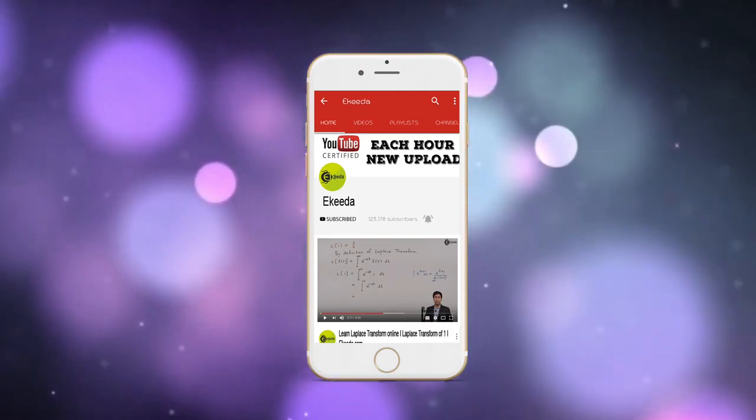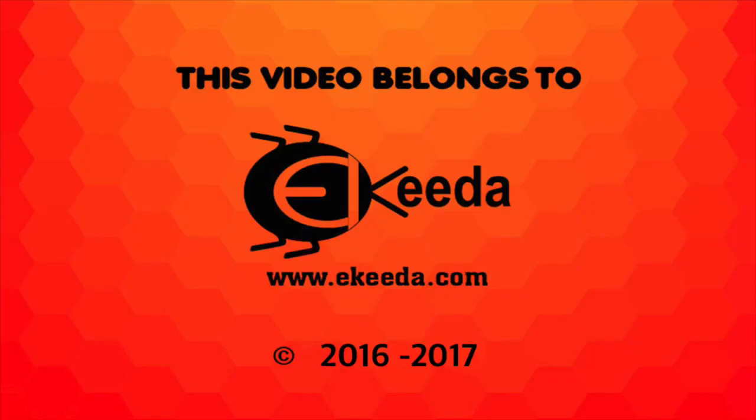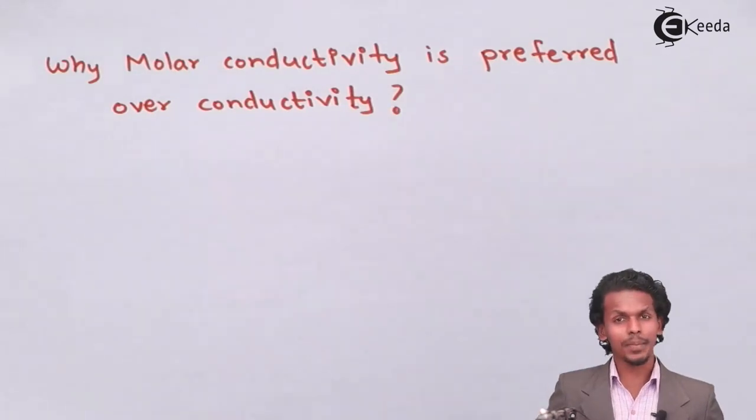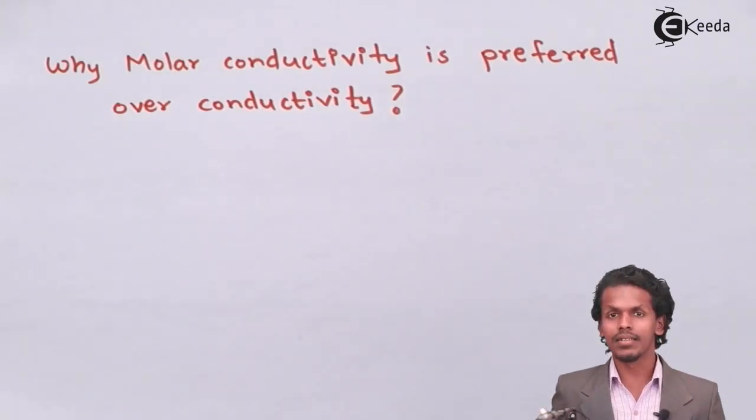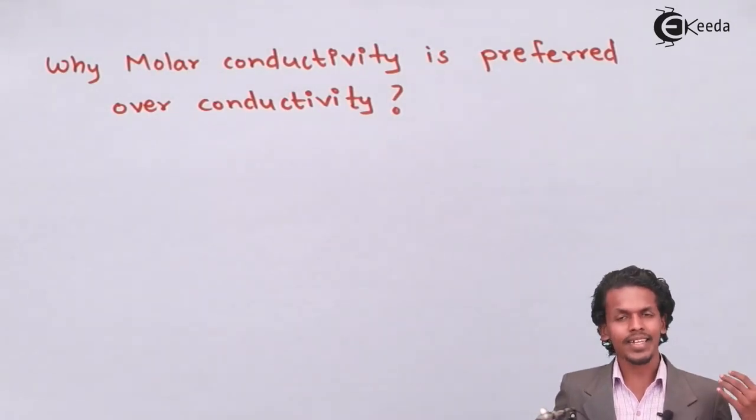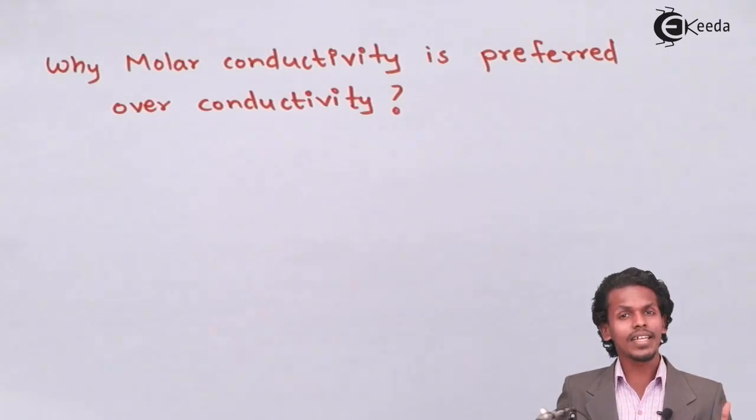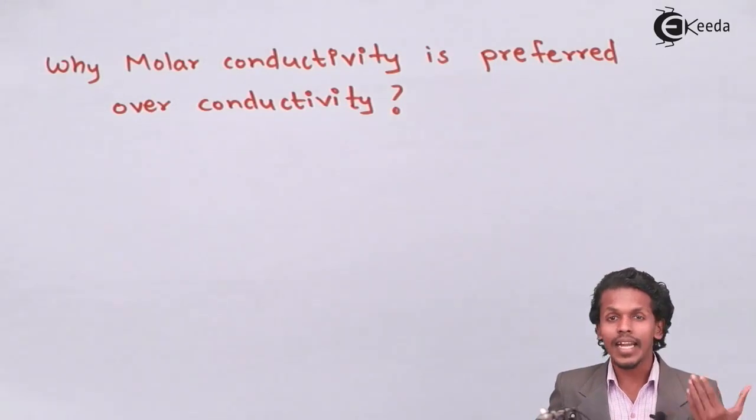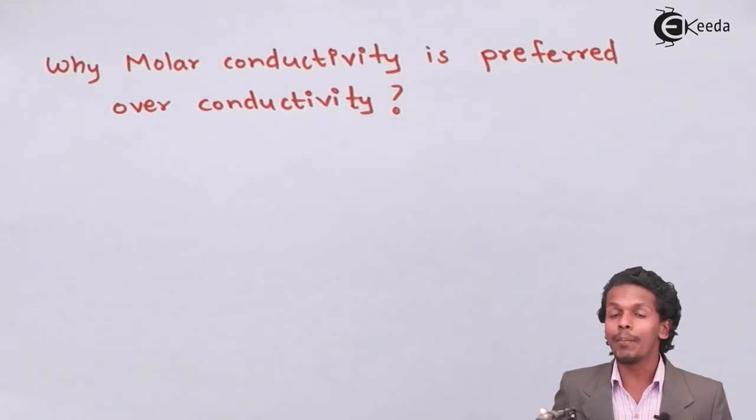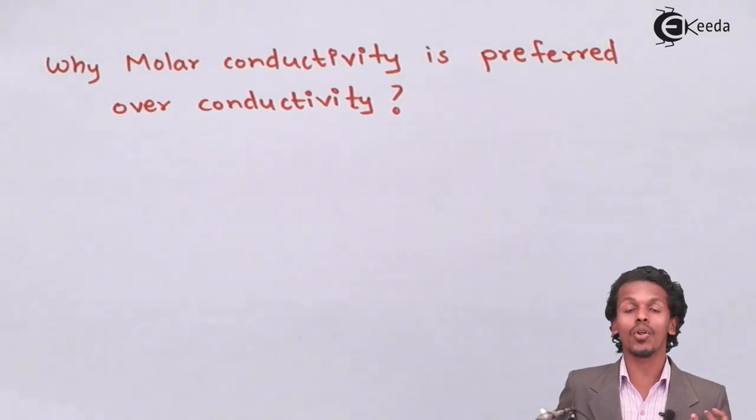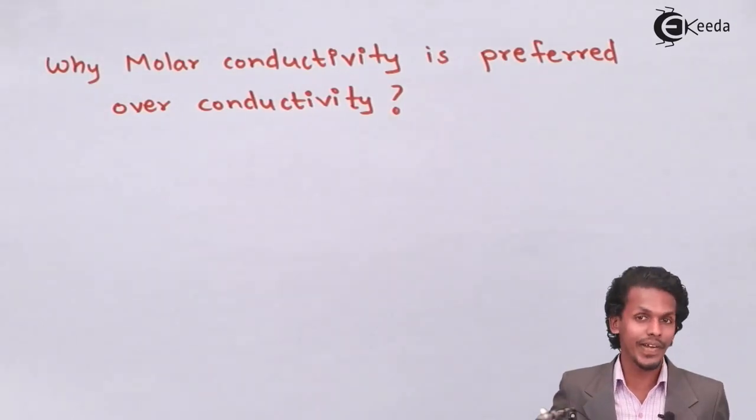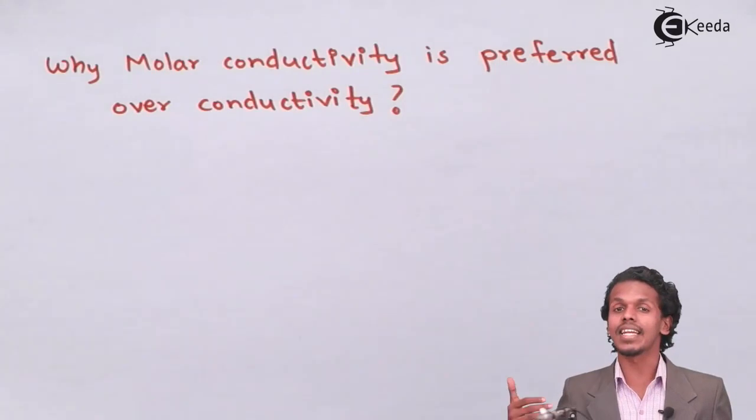Conductivity is the amount of ions present in a solution and the conductance shown by the solution in one cubic centimeter. Conductivity will increase if the number of ions increases or if the concentration increases. So if concentration increases, then conductivity also increases.